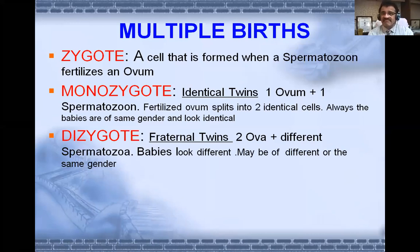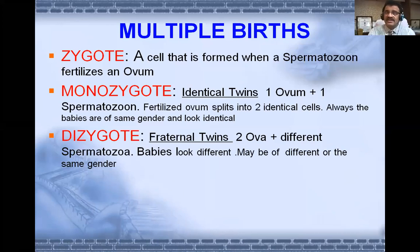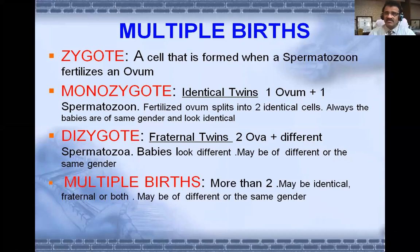Dizygotic twins are fraternal twins. There are two ova and two different spermatozoa, which is why the babies look different. They may be of the same gender — both boys or both girls — or of different genders. Multiple births means more than two babies, and they may be monozygotic or polyzygotic: identical, fraternal, or both, and of different or same gender.